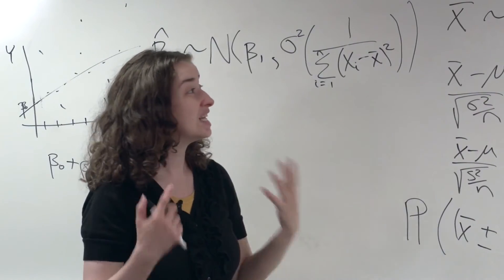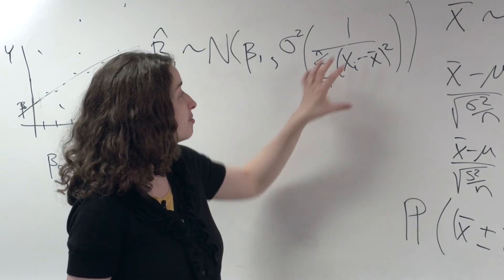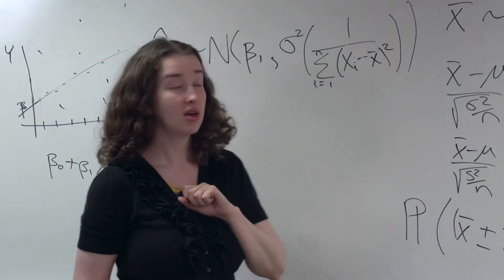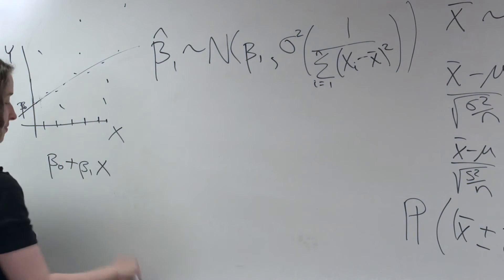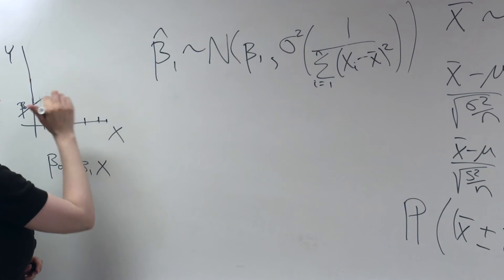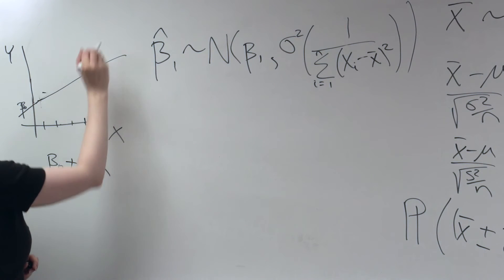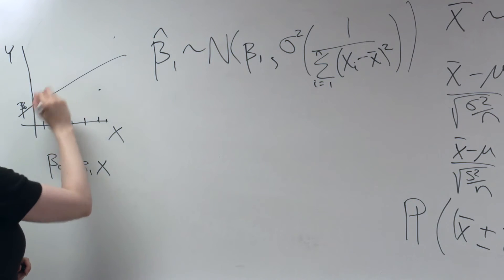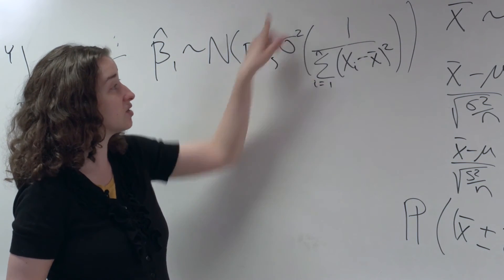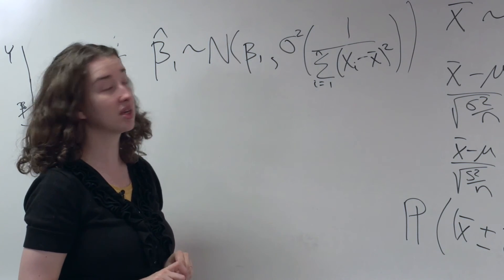The more data I have, the bigger that I expect this denominator to be, in other words, the smaller the entire variance will be. The more data points I have, the closer my estimate of the true slope will be to the true slope. If I just have a couple data points, my slope estimate might be off. But if I have a lot of data points, I'm going to do a much better job estimating the slope. And you see that in this expression because this denominator will be bigger, and so this entire quantity for the variance will be smaller.